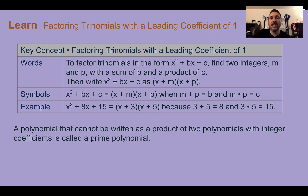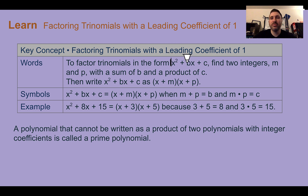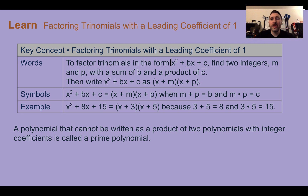Let's learn factoring trinomials with a leading coefficient of 1. The leading coefficient of 1 just means there's a 1 out front of x squared plus bx plus c — you're not going to see that 1, so it'll look like there's no number out front. Sometimes these are called simple trinomials. To factor trinomials in this format, find two integers with a sum of b and a product of c, then write your answer as x plus one integer times x plus the other integer.